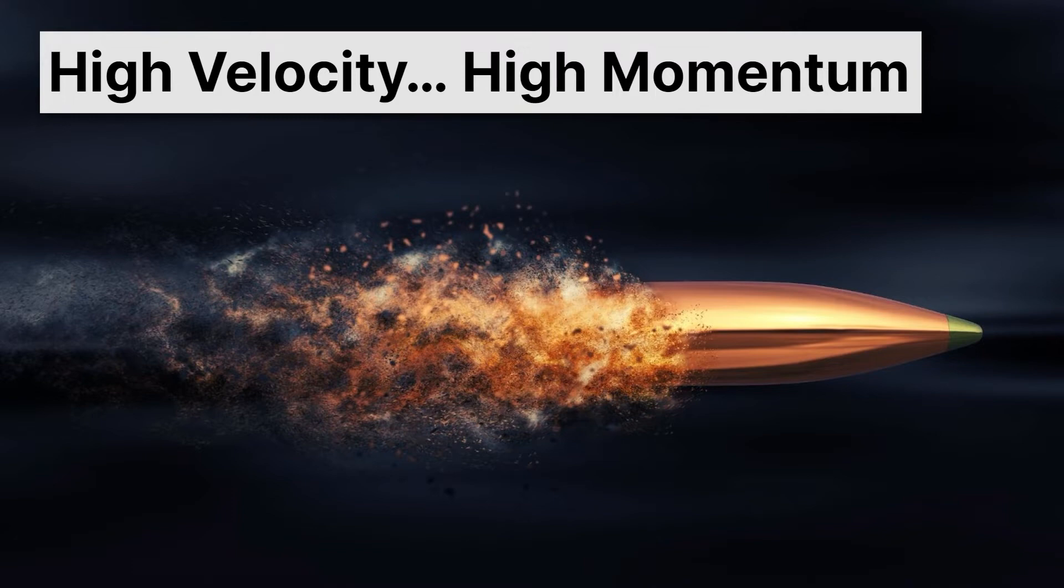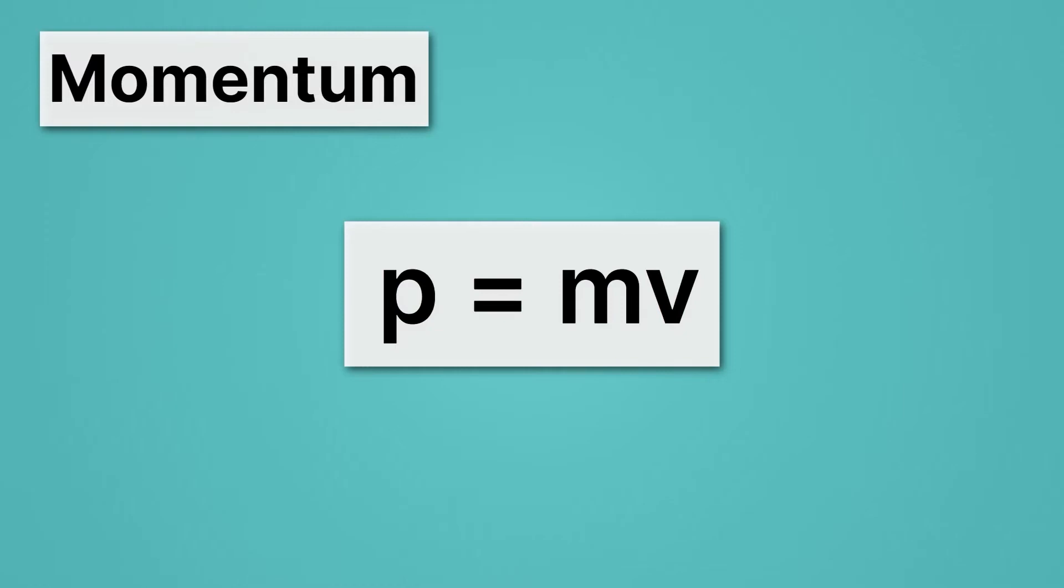Now, we can calculate momentum with this equation, p equals mv. Let's go through each of these variables. First up, we have mass, which is represented by m. That makes sense. And it has to be in kilograms. That's very important. So we're going to do a few practice problems here shortly. And remember that the mass has to be in kilograms.